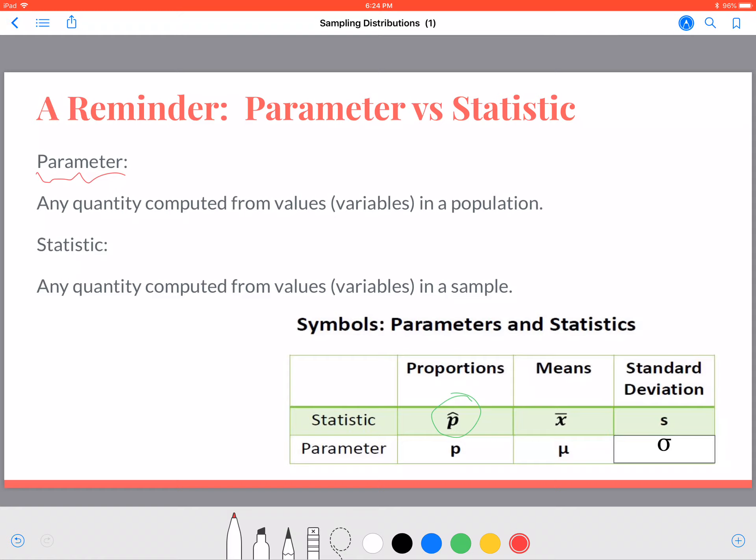Whereas the statistic, the main difference there, is it's a sample or subset of that population that we are summarizing through a computation such as the mean. While that statistic could imply things about parameters, the statistic is just of that sample.